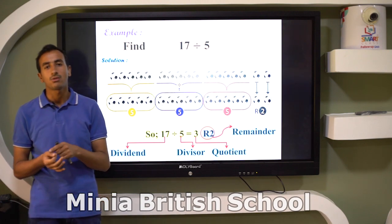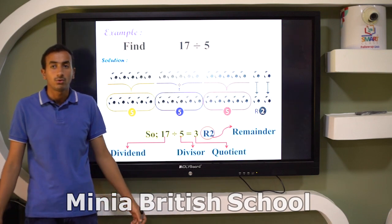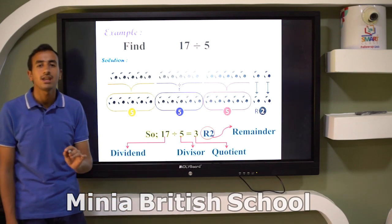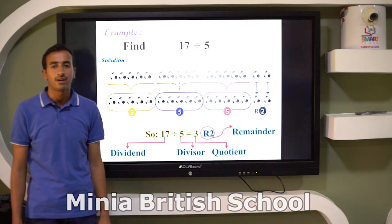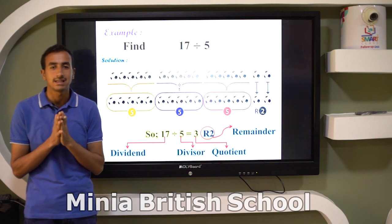But what about 17? I can divide 17 by 5, but I have a remainder. At the end of this example I have a remainder.